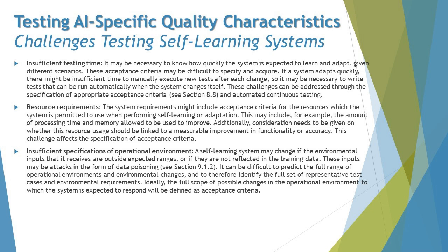If specification is compromised, that could be a form of data poisoning — meaning that wrong information is fed without proper specification, and the system continuously learns something that is not the real expectation. The full scope of possible changes in the operational environment to which the system is expected to respond should be defined as acceptance criteria. All these challenges can be addressed by writing meaningful and effective acceptance criteria, which will be covered later.